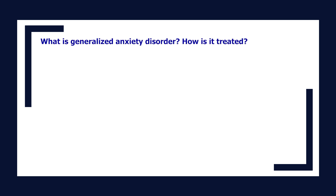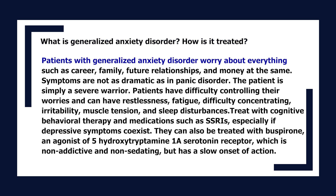What is generalized anxiety disorder and how is it treated? Patients with generalized anxiety disorder worry about everything — career, family, future, relationships, and money simultaneously. Symptoms are not as dramatic as in panic disorder; the patient is simply a severe worrier. Patients have difficulty controlling their worries and can have restlessness, fatigue, difficulty concentrating, irritability, muscle tension, and sleep disturbances. Treat with cognitive behavioral therapy and SSRIs especially if depressive symptoms coexist. They can also be treated with buspirone, an agonist of 5-HT1A serotonin receptors, which is non-addictive and non-sedating but has a slow onset of action.